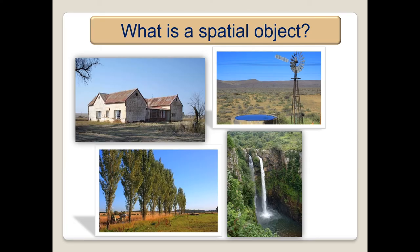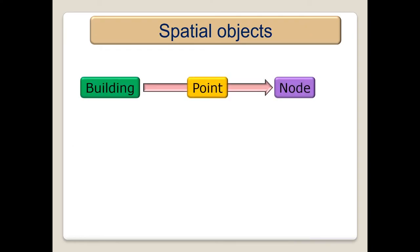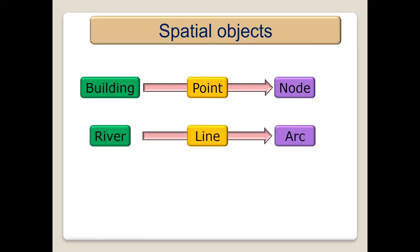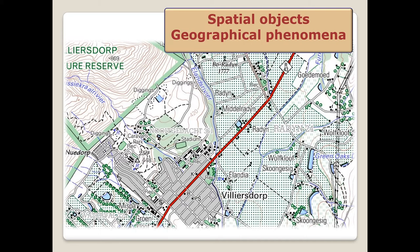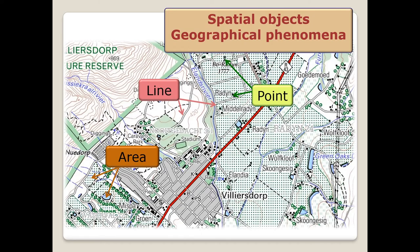A spatial object in GIS is a way of representing a physical feature on a map — for example a building, wind pump, orchard or vineyard, and a river. Spatial objects such as a building are represented by points or a node. A river is a line or arc. An orchard is an area or polygon. On this topographic map extract, our wind pump and farm step are represented by the point, our river and roads by a line, and the orchard and vineyard as the area.